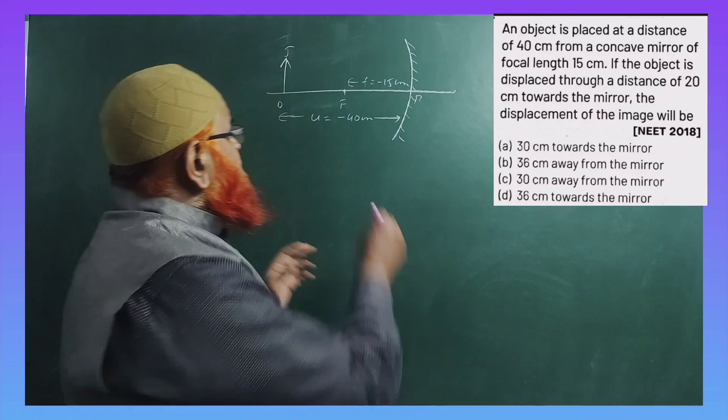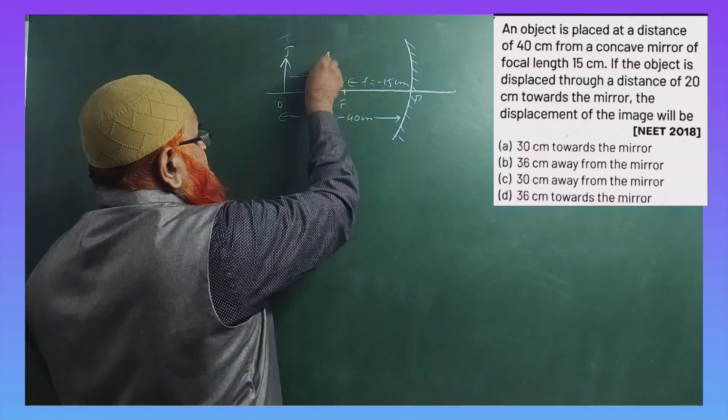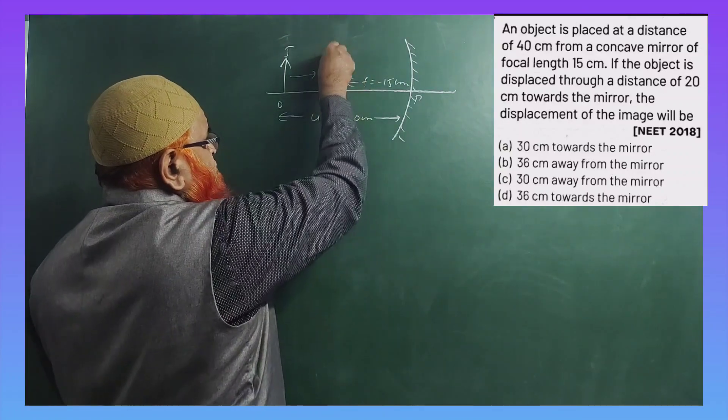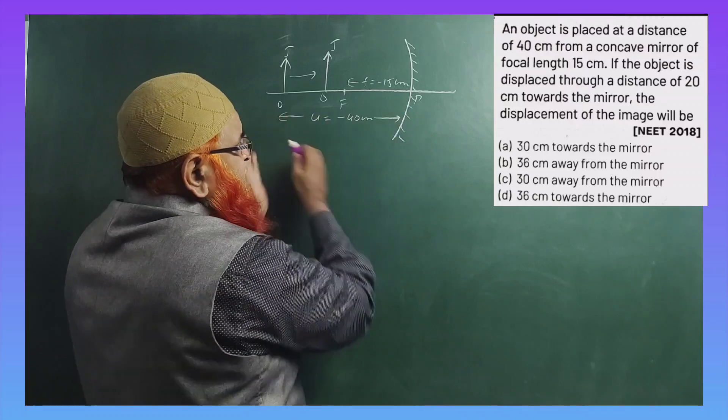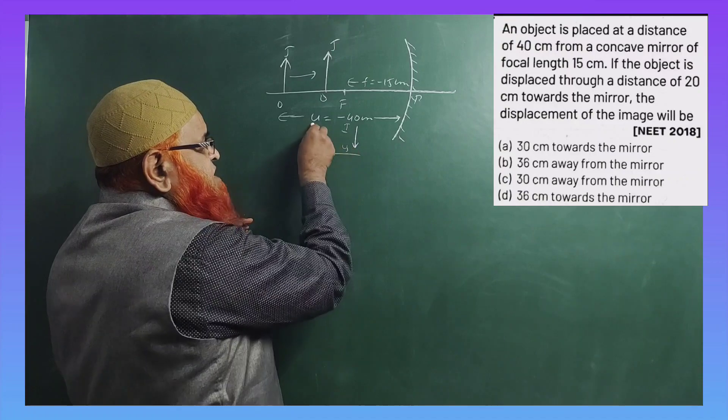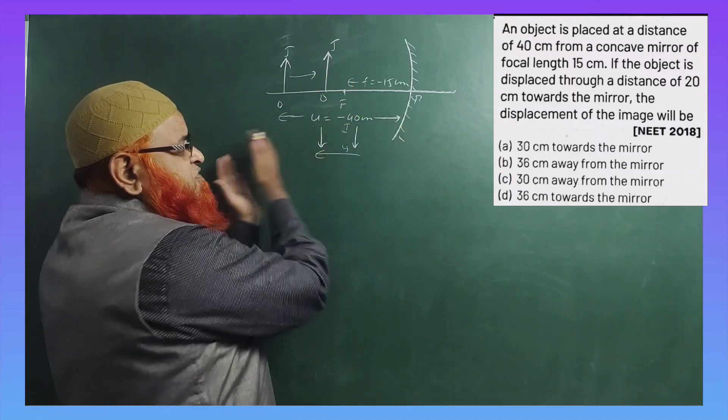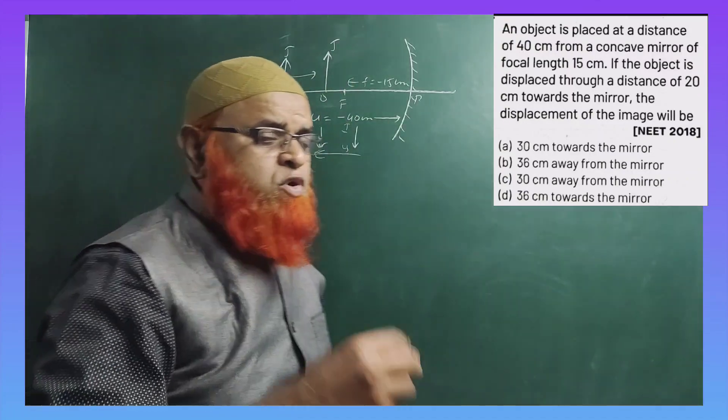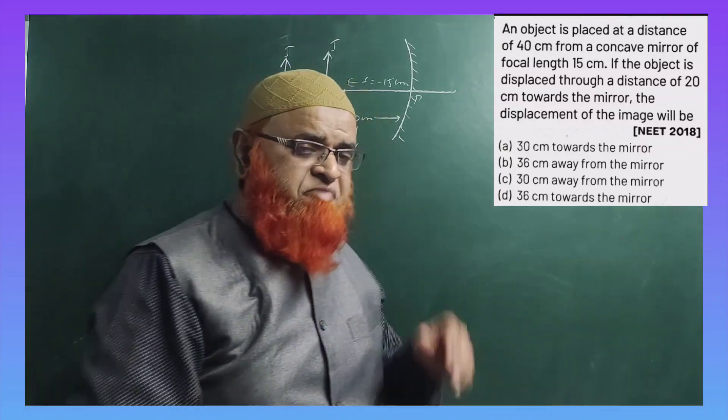The problem says that when you shift the object towards the right from here to here, how much is the image shifted? For example, the image is here. It may be shifted in this direction. If this is the image forming here, it will be shifted a little bit left side. So how do you find the formula for this type of problem?